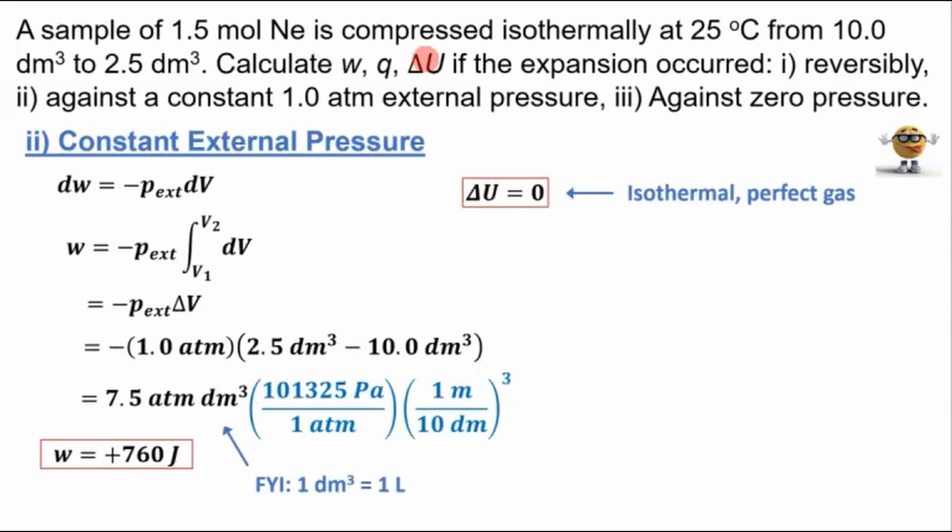Now as before, the change in internal energy is zero because we're assuming this is a perfect gas or an ideal gas. The change in internal energy only depends on a change in temperature for a perfect gas. So using the first law of thermodynamics for a closed system, if we plug in zero for the internal energy and solve for the heat, we get it equal to negative of the work. And we know what the work is.